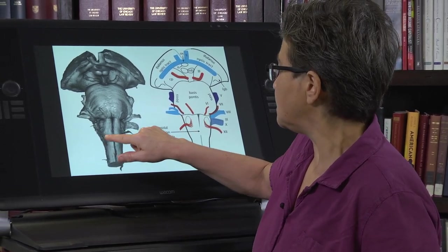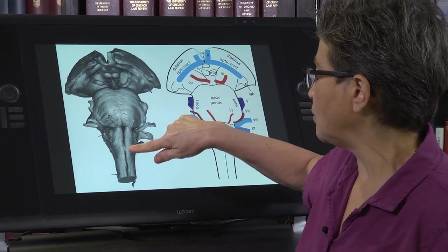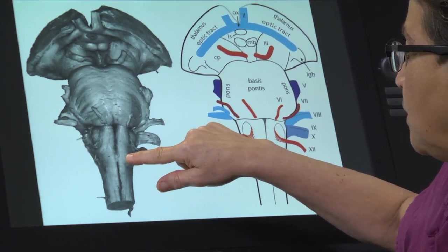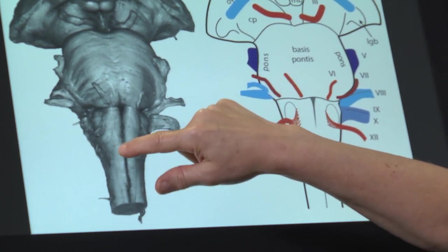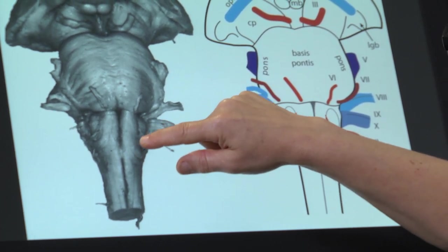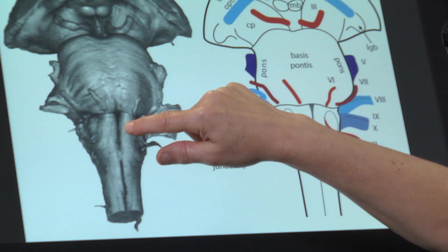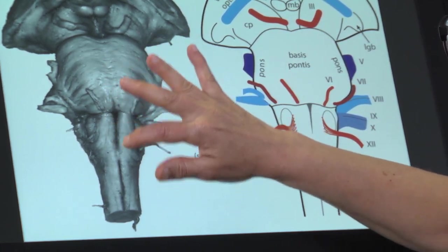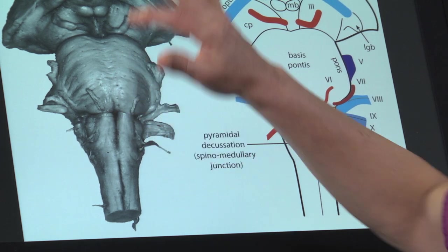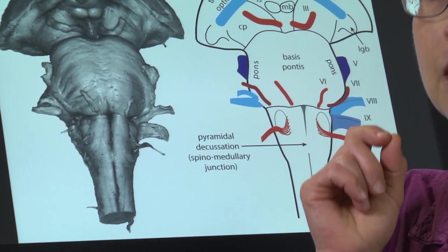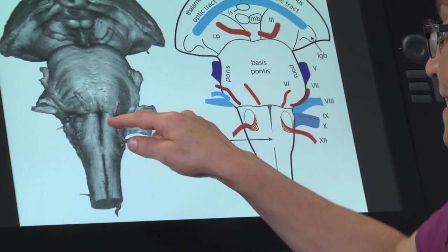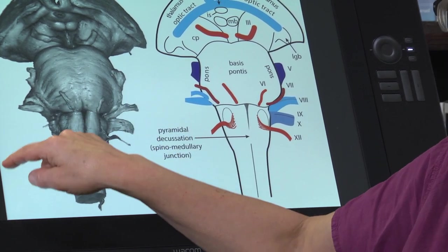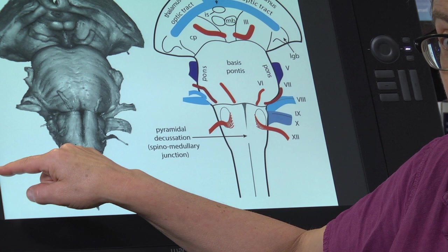The medulla — as we said before — has one important landmark: the spino-medullary junction, where you see this blurring of the midline. Rostral to that, on the ventral surface of the medulla, are these two areas right here called the pyramids. These contain the corticospinal tract. At this level, the corticospinal tract is controlling movement on the opposite, contralateral, side.